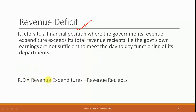What this means is that one section of expenditure and one section of receipts is taken into consideration here — that is, the revenue expenditure and the revenue receipts. Revenue expenditures are all those expenditures which are short-term and largely for maintenance purposes. Similarly, revenue receipts are those receipts which come on a regular basis to the government and which are non-liability creating — in short, they represent the short-term income of the government.